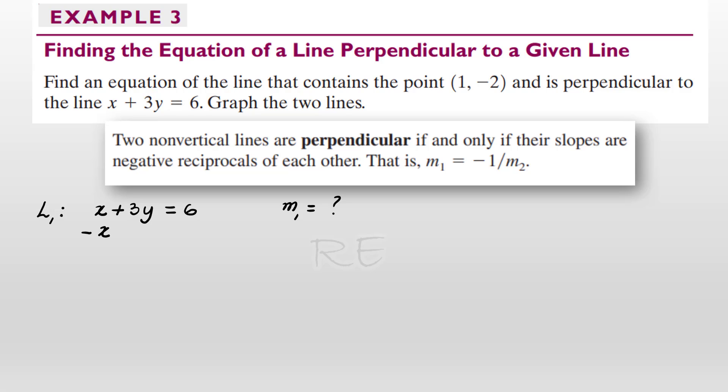First we're going to look for M1. We subtract X from both sides. 3Y is equal to negative X plus 6.